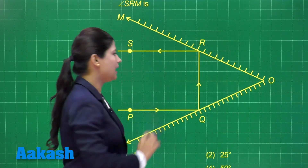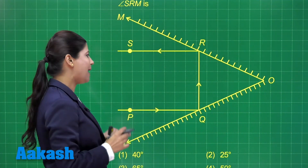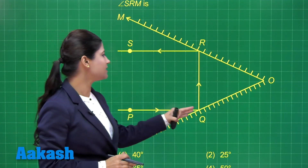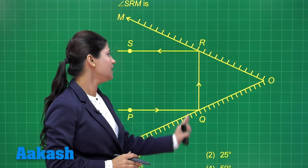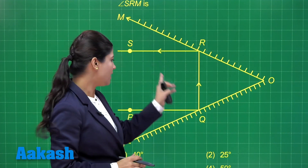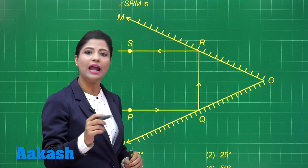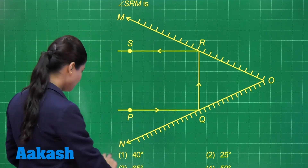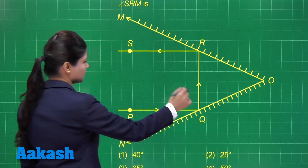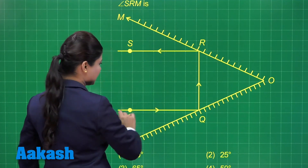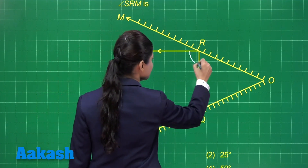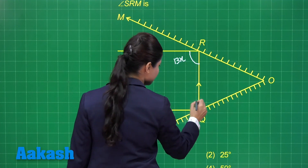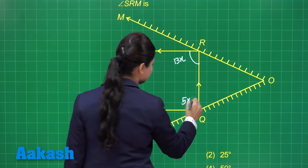M and N are plane mirrors. In the case of a plane mirror, if there is an incident ray and a reflected ray, then you have a normal. The incident ray and reflected ray make equal angles with the normal. It has been stated in this question that angle QRS and angle PQR are in the ratio 13 to 5. If I consider this to be 13x, this will be 5x.